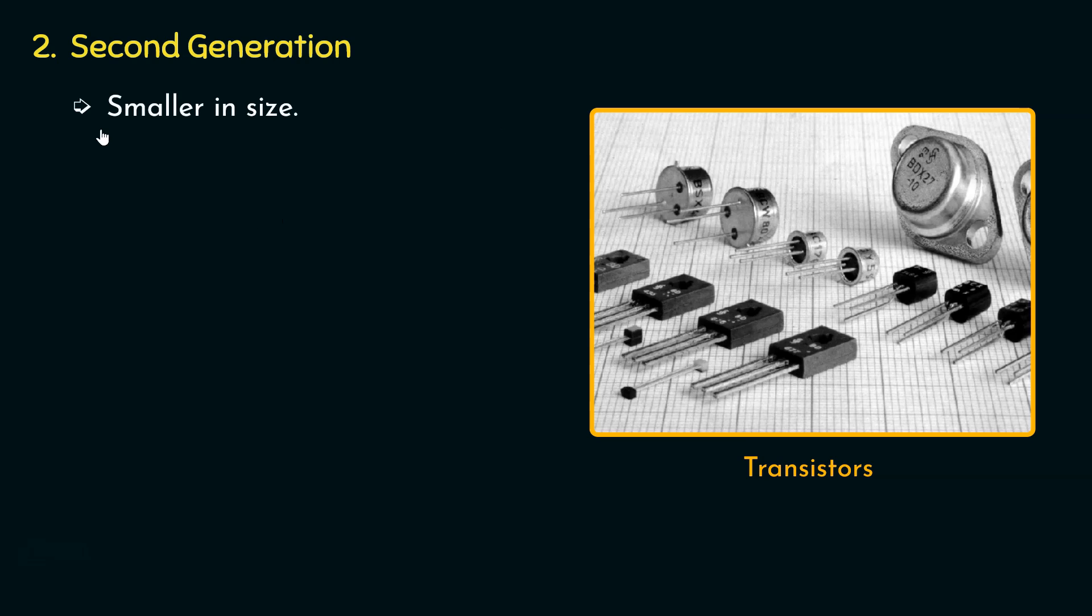Well, the transistors were smaller in size, and this miniaturization allows for the creation of compact and portable electronic devices, which is crucial for modern day applications like smartphones and laptops. Thereafter, the transistors were more energy efficient. In the first generation of computers, the usage of vacuum tubes resulted in excessive heat. Since the transistors were more energy efficient, they generated less heat during operation, contributing to energy savings and enabling the design of more power efficient electronic systems.